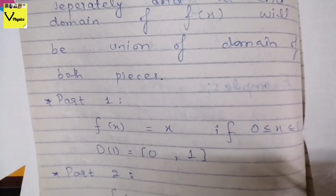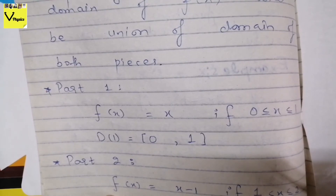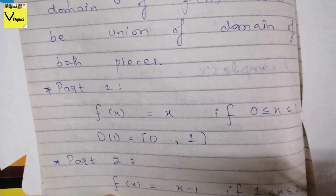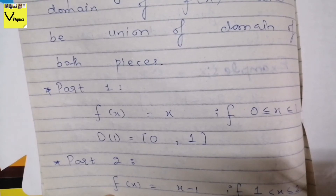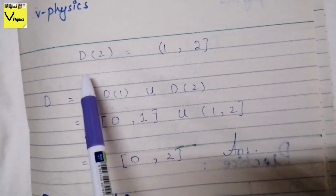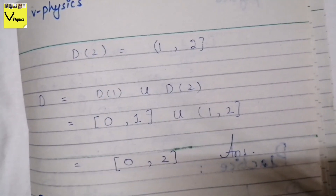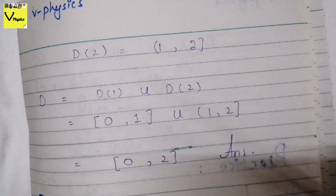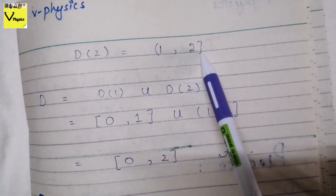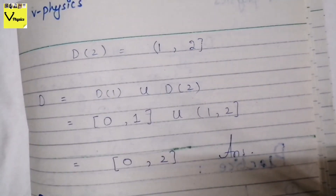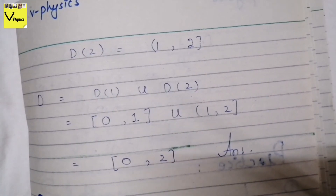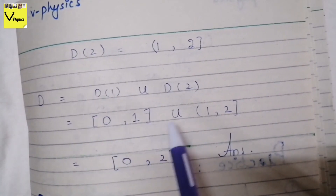The second piece is f(x) = x − 1, with condition 1 < x ≤ 2. Here we have a strict less-than on the left (1 is not included) but equal sign on the right (2 is included). So the domain of the second function is (1, 2]. The domain of the full piecewise function f(x) is the union: [0, 1] ∪ (1, 2].